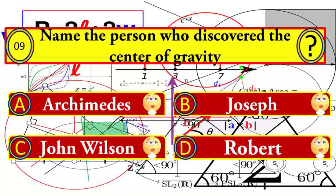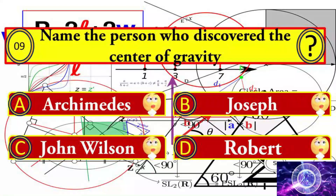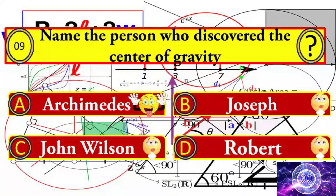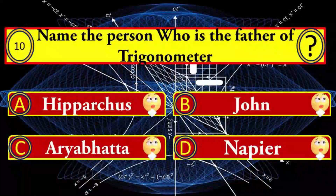Question number nine: name the person who discovered the center of gravity. Your options: A) Arkamadis, B) Joseph, C) John Wilson, and D) Robert. Arkamadis is the right answer.